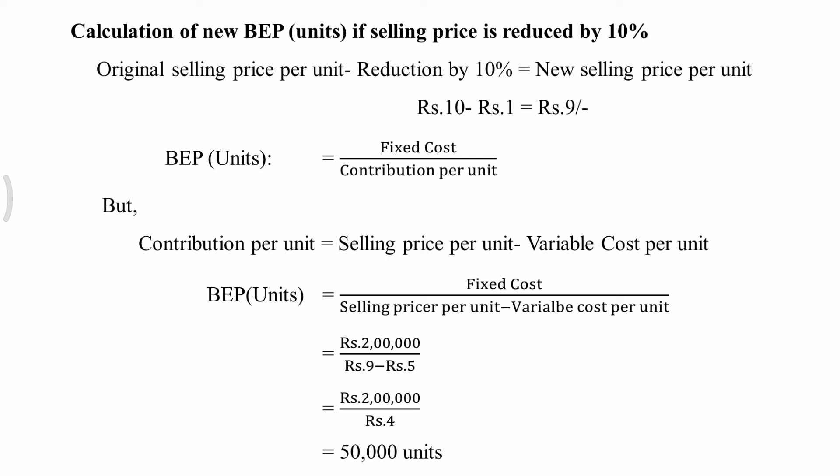Now we calculate new BEP in units. Formula: fixed cost divided by contribution per unit, where contribution per unit equals selling price per unit minus variable cost per unit. Fixed cost is rupees 2 lakh, new selling price per unit is rupees 9, and variable cost is rupees 5. So 9 minus 5 equals rupees 4. BEP units = 2 lakh divided by 4 = 50,000 units. This is the new BEP units when selling price is reduced to rupees 9. Thank you.